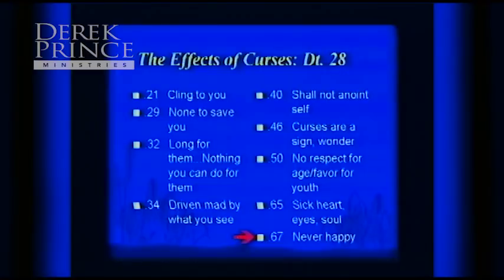Verse 65: if you've come under the curse and gone into some kind of captivity, 'the Lord will give you a trembling heart, failing eyes, and anguish of soul.' When you look at your life, you're sick at heart, your eyes are sad, your soul is destroyed — because you see what could have been and is not happening. Verse 67: 'In the morning you shall say, oh that it were evening. And at evening you shall say, oh that it were morning, because of the fear which terrifies your heart.' When people are under a curse, they're never happy — it's the will of Satan to so decimate your life that there's never a place of rest and peace.